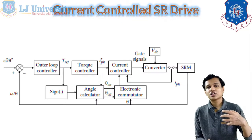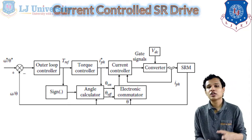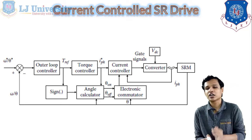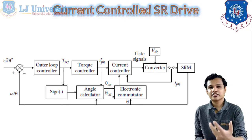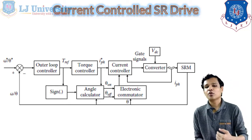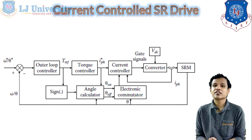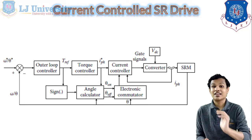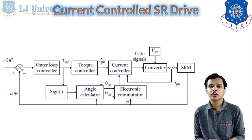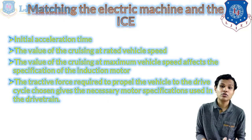The current-controlled SR drive controls current instead of voltage. An open-loop controller is used along with a torque controller placed between the open-loop and current controller. The angle calculator is still present to calculate the angle of the stator blades, and the electric commutator is connected to the current controller, which further gives the converter and SRM values. The speed and torque of the SRM are controlled accordingly.